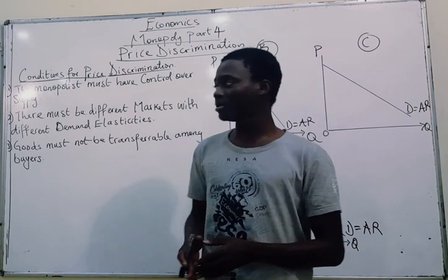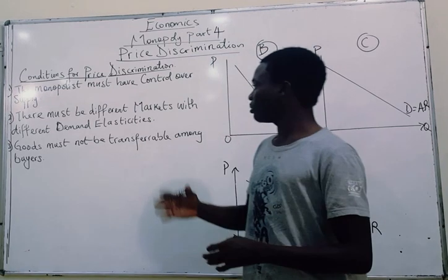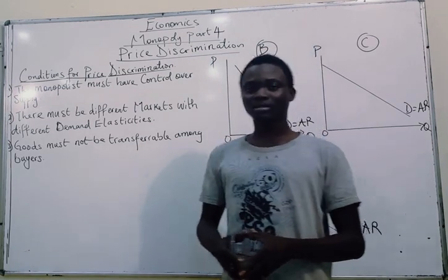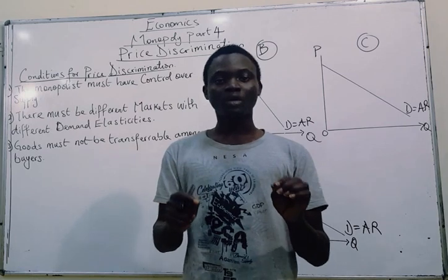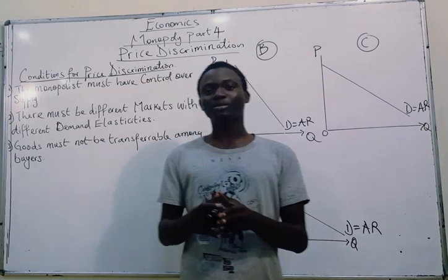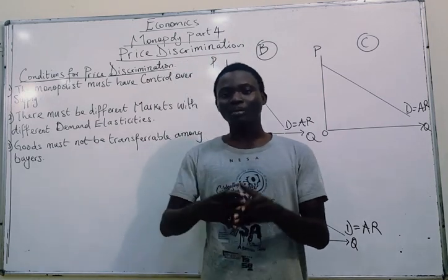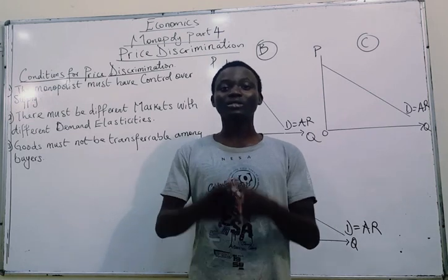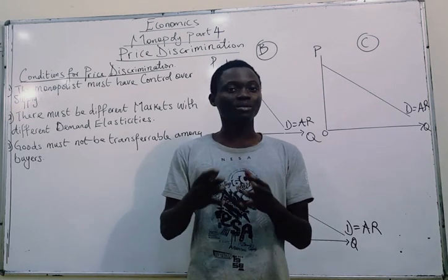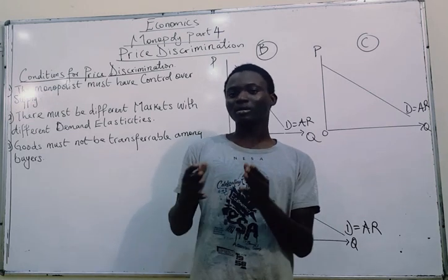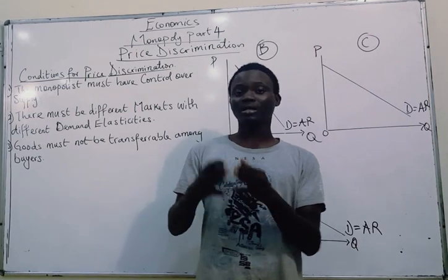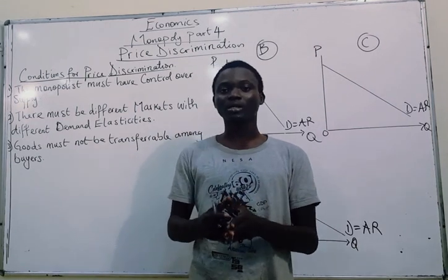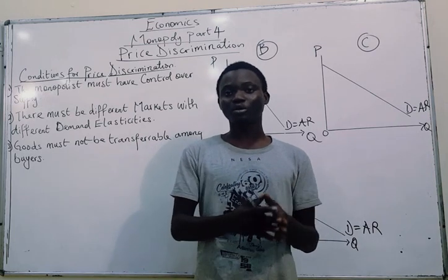That's not the only condition. Number two: there must be different markets with different demand elasticities. For the same good, the monopolist must be able to separate its total market into two or three segments with different demand elasticities. In one particular market there could be an inelastic demand curve, and in another market there could be an elastic demand curve for the good.